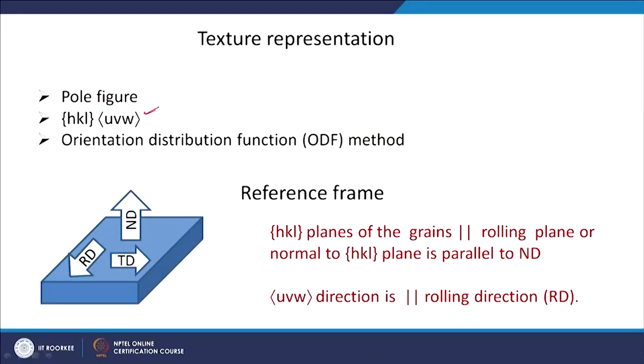In terms of texture representation, basically you have three methods: you can show it in terms of a pole figure, you can express it in terms of what we call the orientation distribution function (ODF), or you can use the HKL UVW notation. The example here shows that with rolling direction, transverse, and ND as the reference frame, we are identifying which HKL plane of the grain is parallel to the rolling plane.